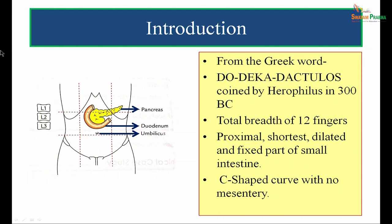Duodenum is a proximal, shortest, dilated, and fixed part of the small intestine. It has a C-shaped curve, and in its concavity fits the head of the pancreas. The C-shaped duodenum does not have any mesenteric fold attached to it.